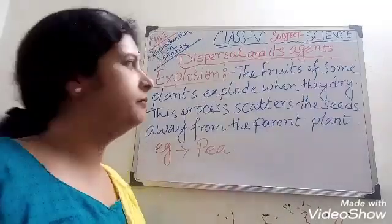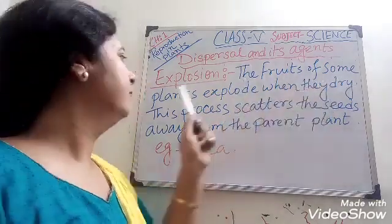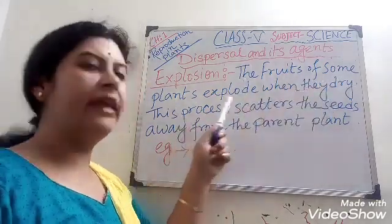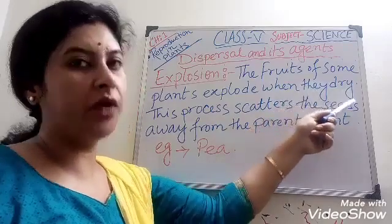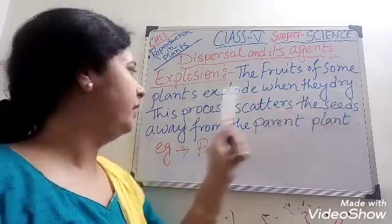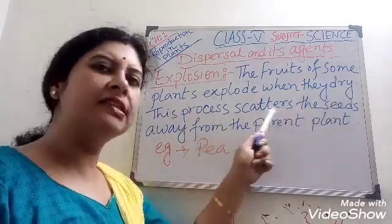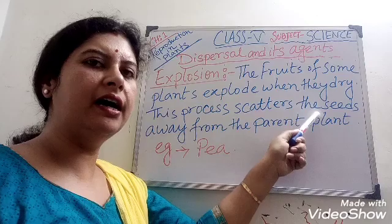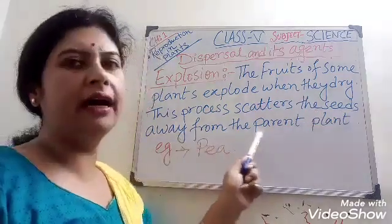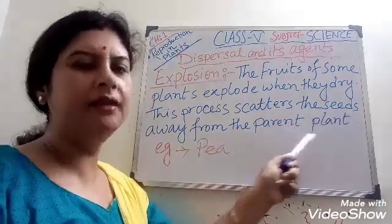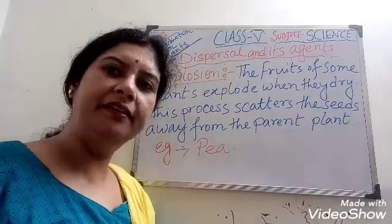Explosion. The fruits of some plants explode when they dry. This process scatters the seeds away from the parent plants. Example: pea.